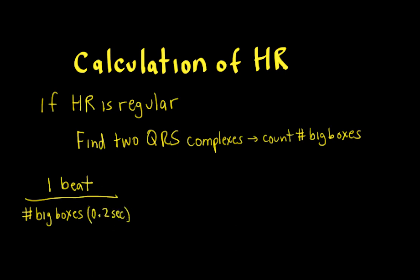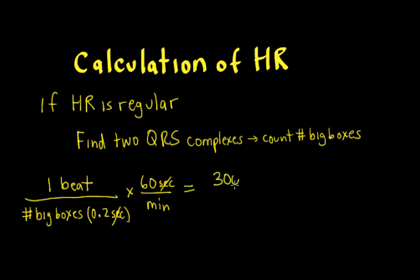Since we want heart rate in beats per minute, we need to multiply by 60 seconds in a minute, and now we see the seconds cancel out. 60 divided by 0.2 — that's a constant — that's 300, and it's divided by the number of big boxes.